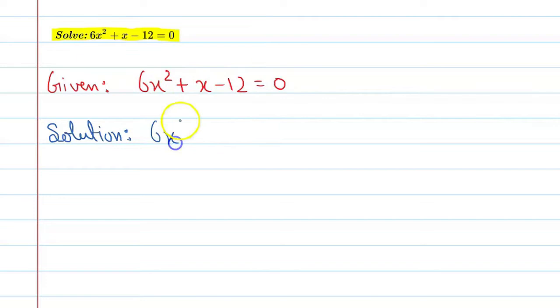So, these numbers are 6x square plus 9x minus 8x minus 12 equal to 0. From here take common 3x, we will get 2x plus 3. Alright, from here take minus 4 as a common you will get 2x plus 3 equal to 0.